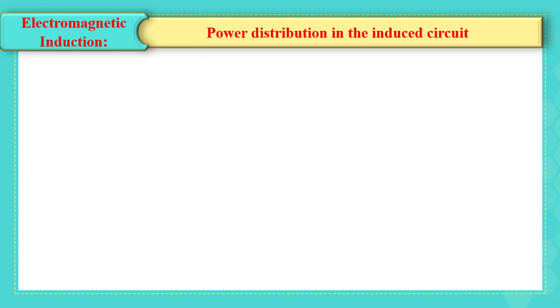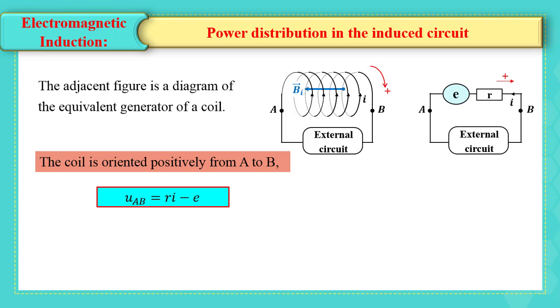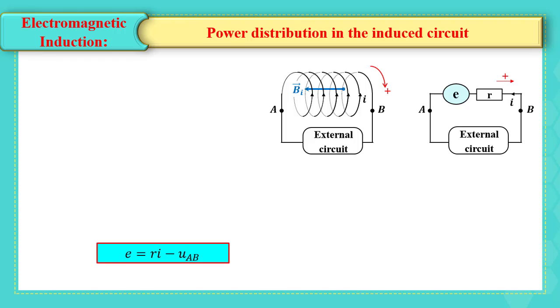Power distribution in the induced circuit. The adjacent figure is a diagram of the equivalent generator of a coil. The coil is oriented positively from A to B. So, the voltage UAB equals Ri minus E. Then, E, the induced electromotive force, equals Ri minus UAB.